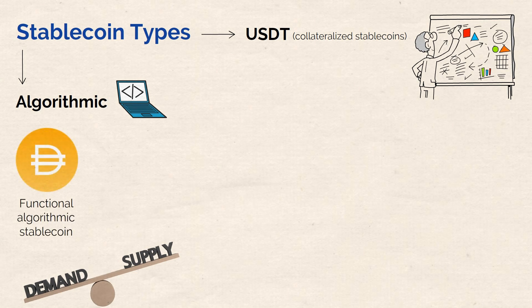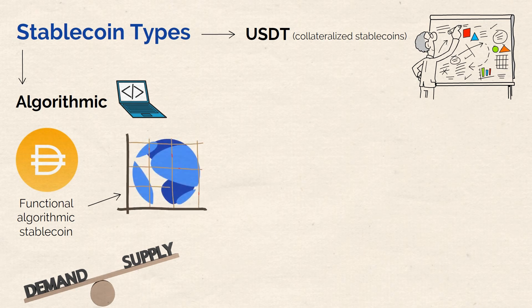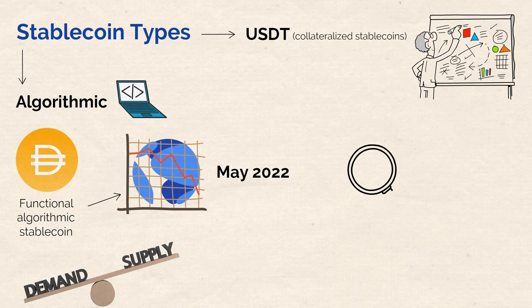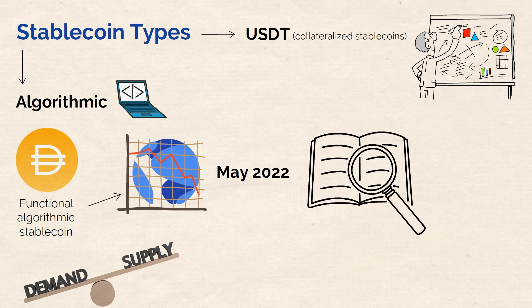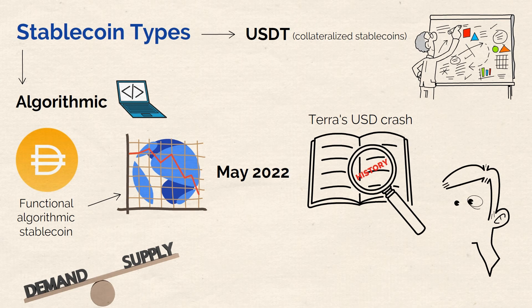A more infamous example of algorithmic stablecoins would be Terra USD, or UST, which crashed in May 2022. Terra's USD crash is a significant event in recent crypto history and is closely tied to the history of stablecoins.